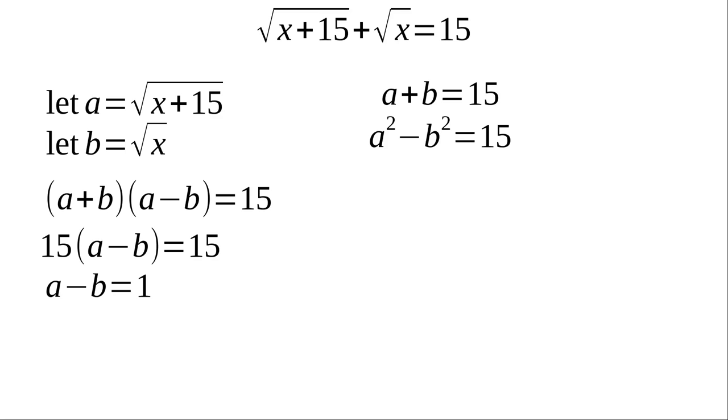That means that our square roots have to differ by 1. That means, and now we can solve this here. We have enough information to solve for b. And I'm going to solve for b because we're looking for x. So, now from this, we know that a is b plus 1. So if we substitute that into the a plus b equals 15 equation, we end up with b plus 1 plus b is 15, which is 2b equals 14. And that means b has to be equal to 7.